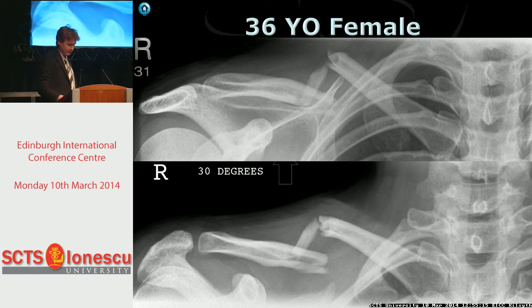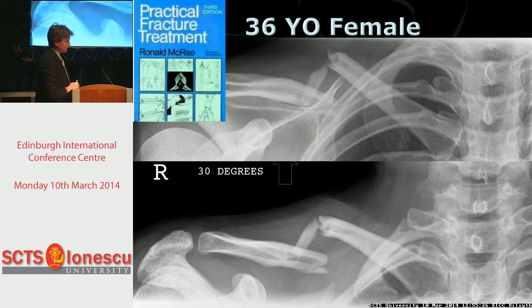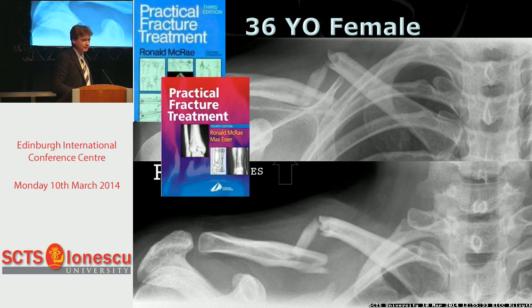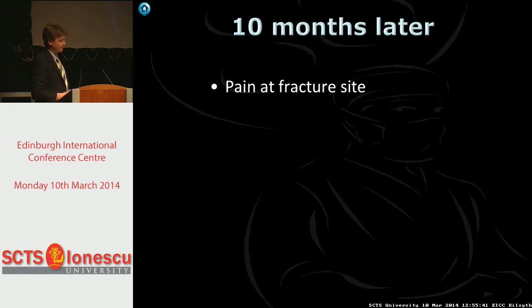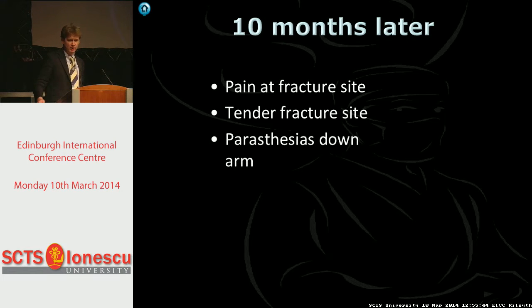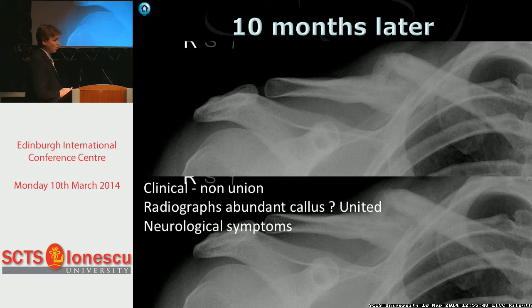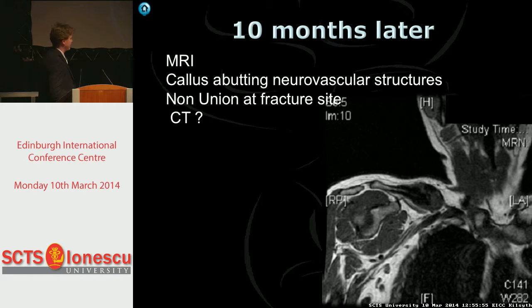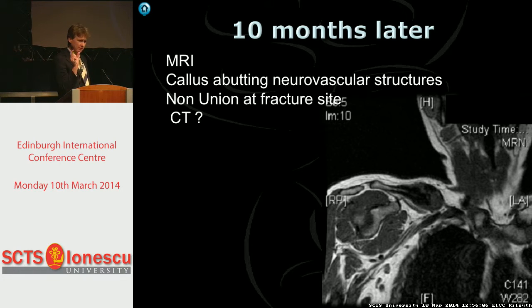Here's a 36-year-old female with a clavicle fracture showing some displacement and comminution. Classically, old textbooks would end with 'non-operative treatment, broad arm sling, and off you go.' But this lady, ten months later, had pain and tenderness at the fracture site and paraesthesias running down the arm. The radiograph shows a whole lot of callus - you'd think it had united. But she had neurological symptoms, so we did an MRI scan which showed a big ball of callus pushing on the brachial plexus - she was getting thoracic outlet obstruction. Those displaced ones kick out more callus and get more thoracic outlet obstruction.